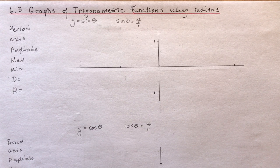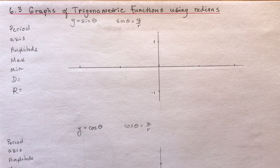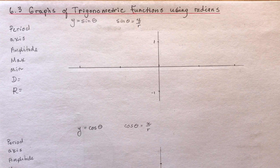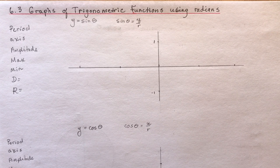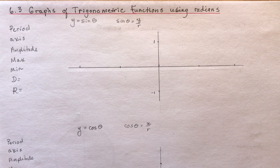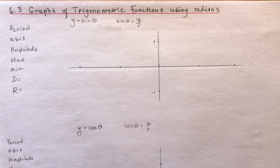6.3 covers the graphs of trigonometric functions using radians. So basically this is going to be about a five-minute lesson because you've graphed a lot of trigonometric functions last year using degrees and all we're doing is changing it to radians.